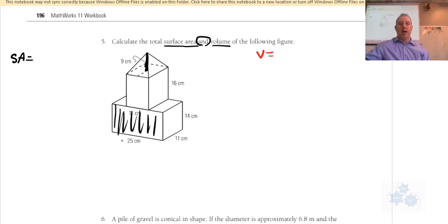So the easiest would probably be let's do this side. That's going to be 25 by 14, right? So 25 times 14. Now would there be a front side and a back side for that one? There would, right, because it should be the same on the front and the back.